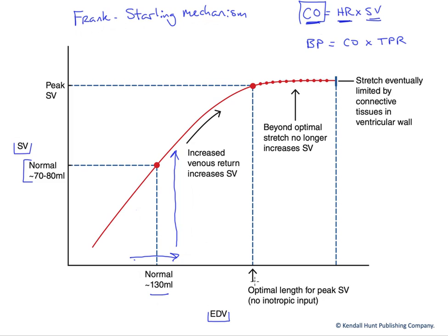Finally, another example would be changes in blood volume. Many of the hormones that regulate blood pressure actually regulate blood volume, and one mechanism is by regulating urine volume. For instance, some hormones will minimize urine volume, helping us retain water. This increases blood volume, a large portion of which ends up in the high-compliance venous circuit. This increases central venous pressure, which drives blood flow back to the heart, increasing EDV and driving us to the right on the graph, enhancing stroke volume. So those hormones enhance stroke volume and cardiac output.